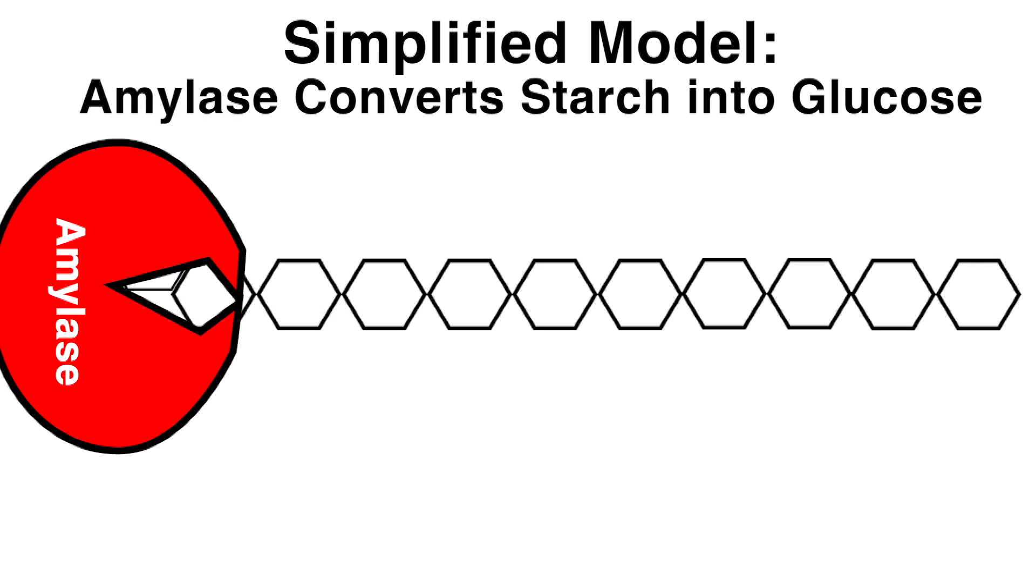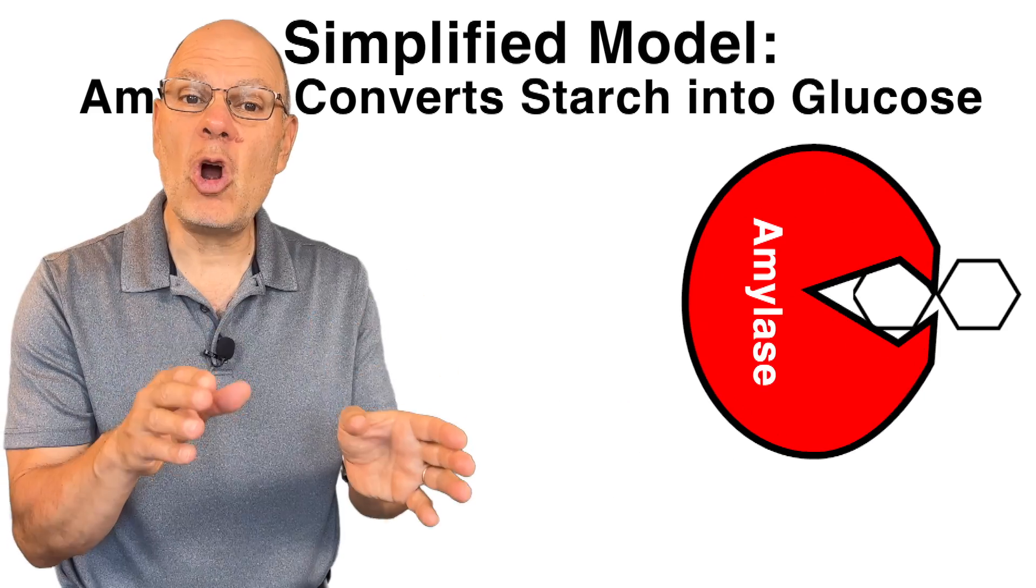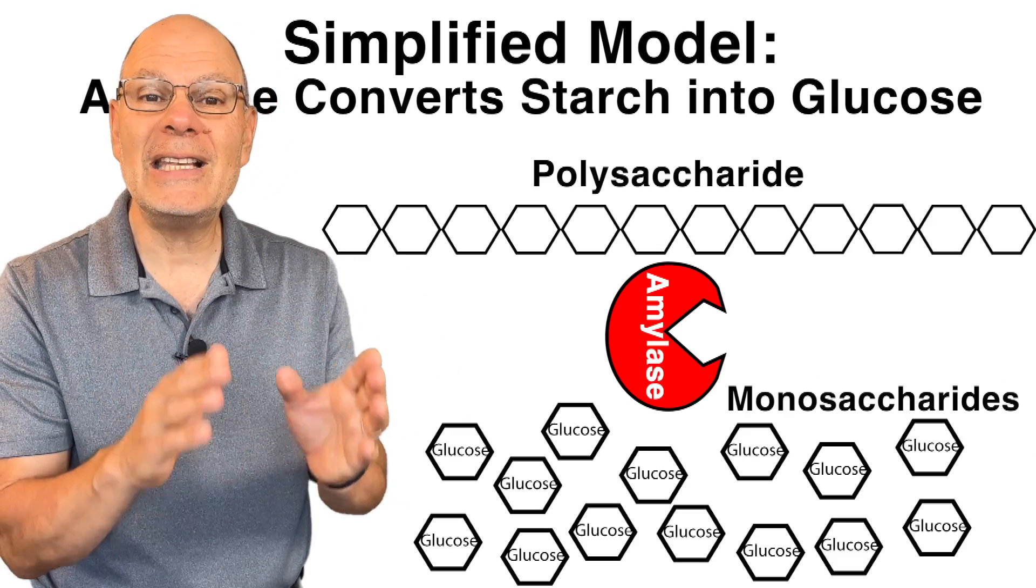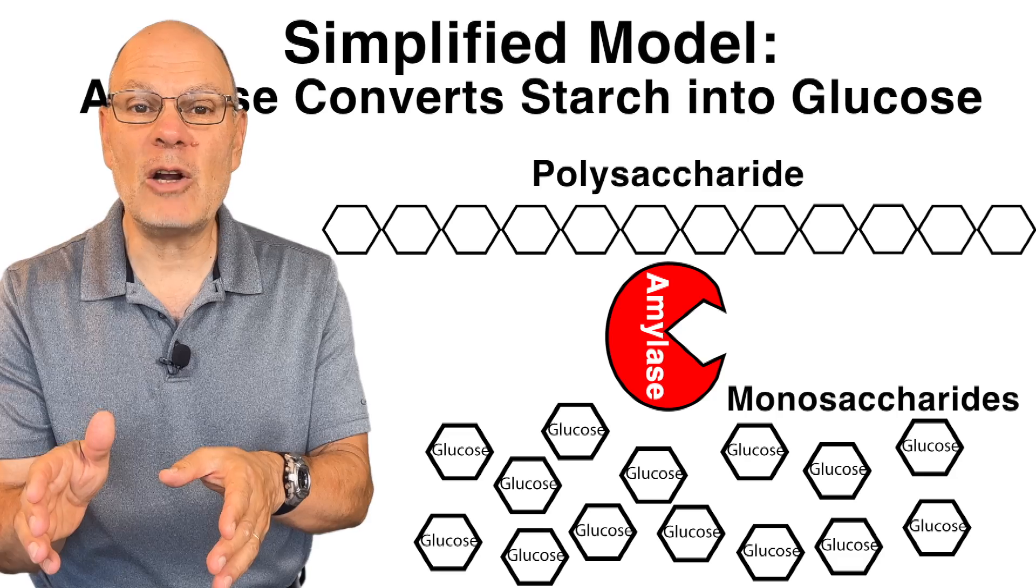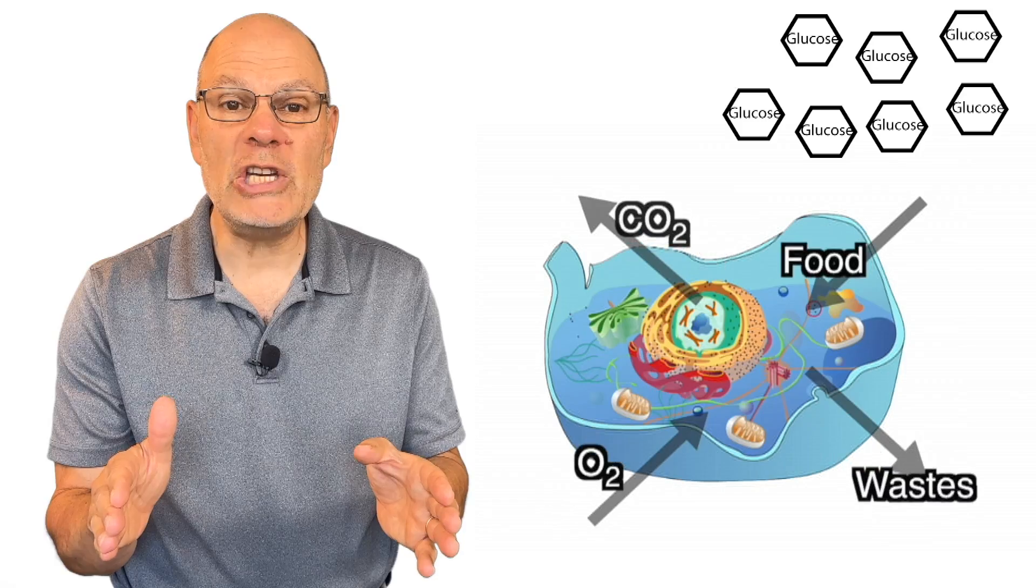This is a bit of an oversimplification, but let's say that what amylase does is convert starch, a polysaccharide, into glucose, a monosaccharide. That glucose can then diffuse into your cells where it can power cellular respiration.